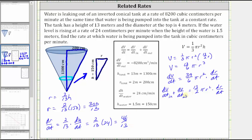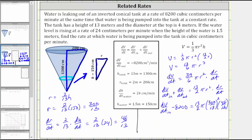Now we have all the information needed to find dV/dt_in. Substituting into our equation: dV/dt_in plus dV/dt_out equals 13/2 pi r squared times dr/dt. So dV/dt_in minus 8,200 equals 13/2 pi times (300/13) squared times 48/13. Adding 8,200 to both sides gives dV/dt_in equals 8,200 plus 13/2 pi times (300/13) squared times 48/13.